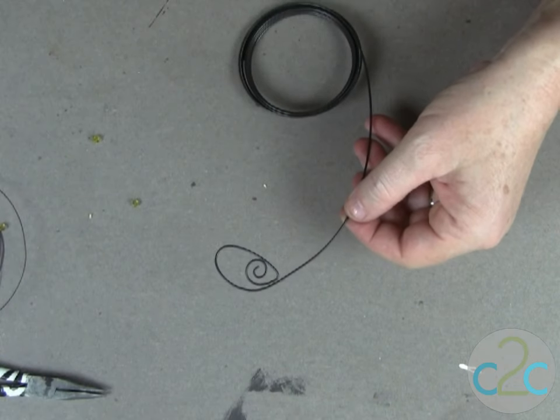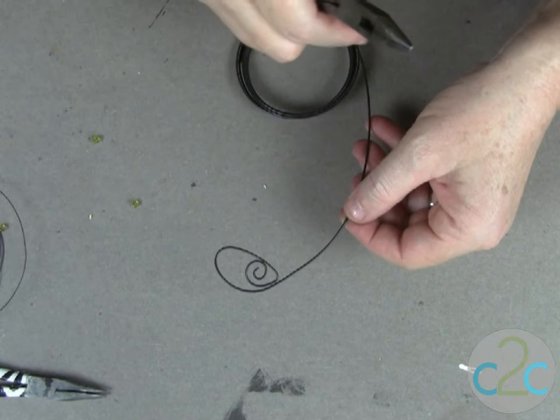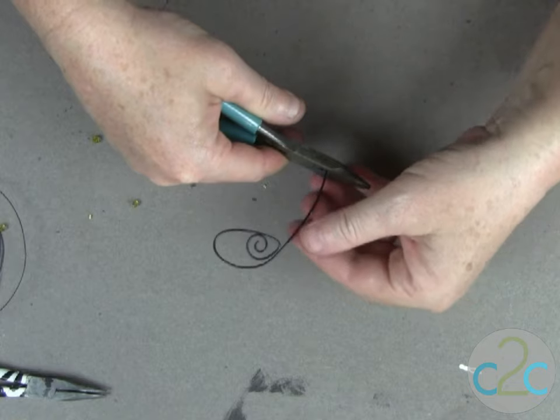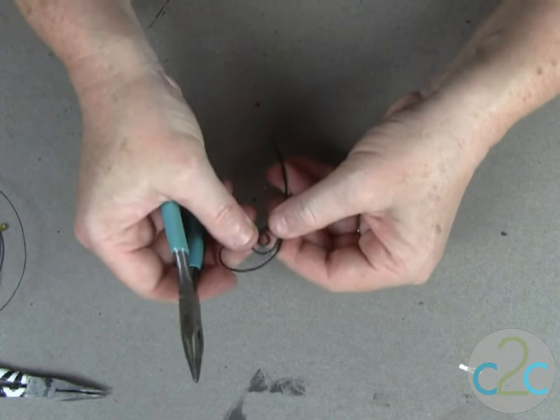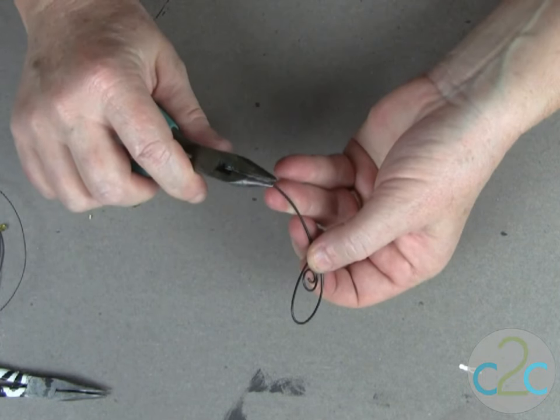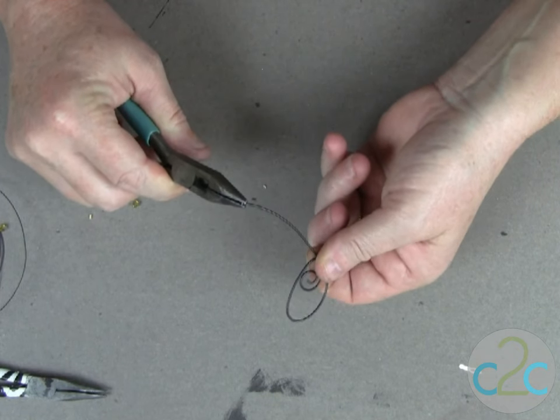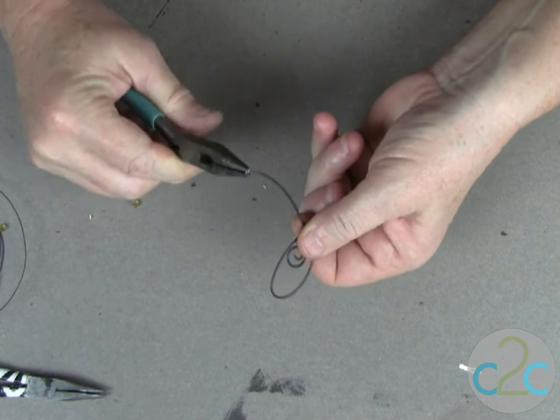Now I'm going to cut this coil off of my spool about an inch and a half, two inches down. I'm not measuring. These all turn out differently just depending on how you wrap your wire and how big your coil is. You can get a variety of different looks.